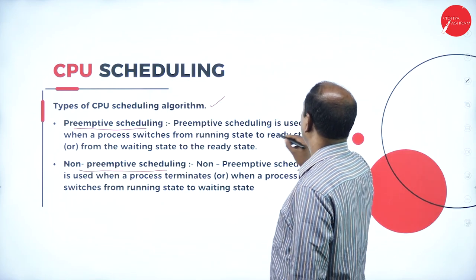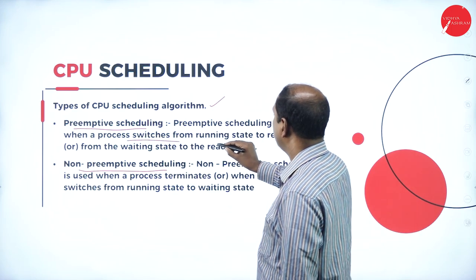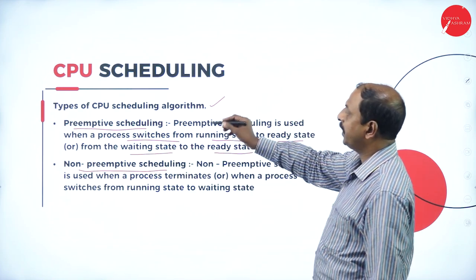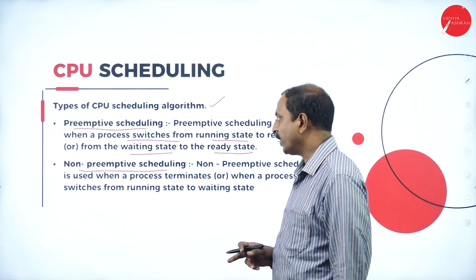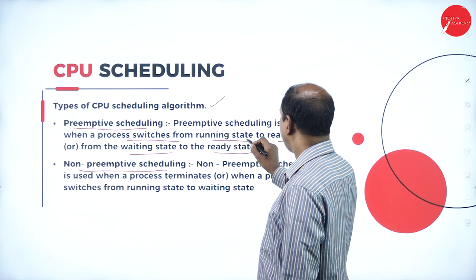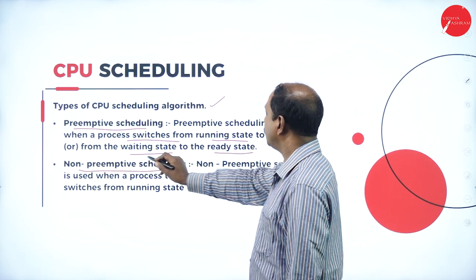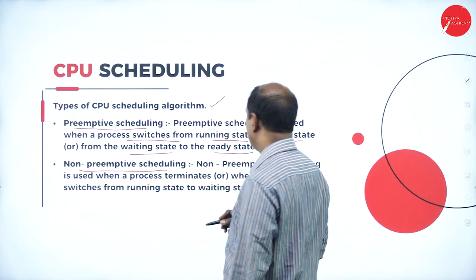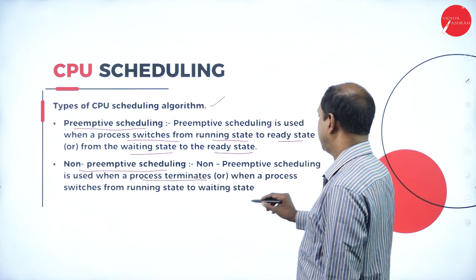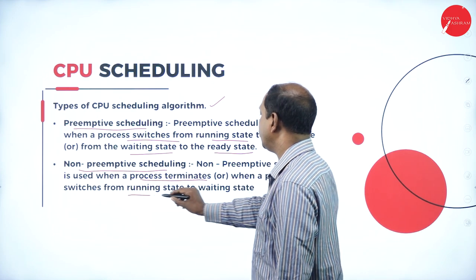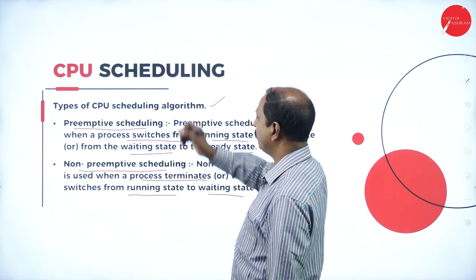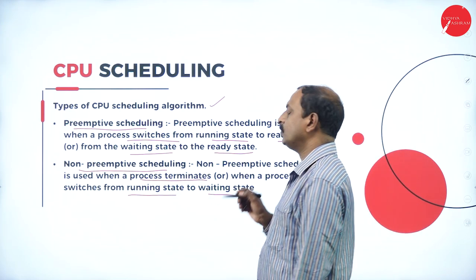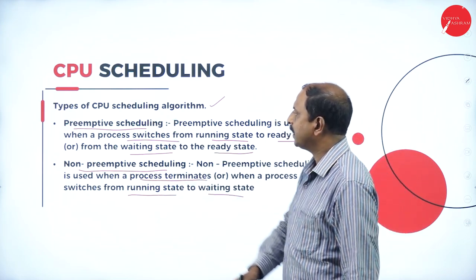In preemptive scheduling, it is used when a process switches from the running state to the ready state, or from the waiting state to the ready state. In non-preemptive scheduling, it is used when a process terminates or switches from the running state to the waiting state. These are the two different types of scheduling algorithms.